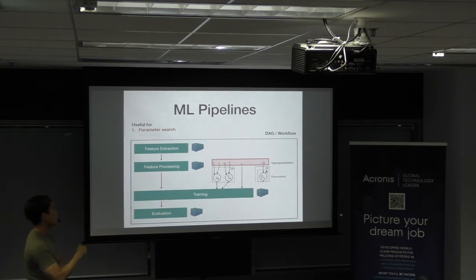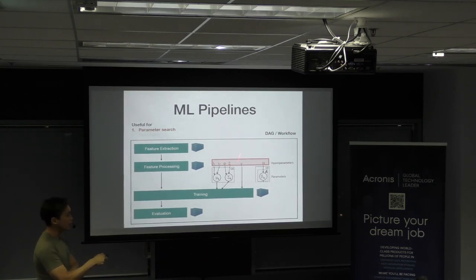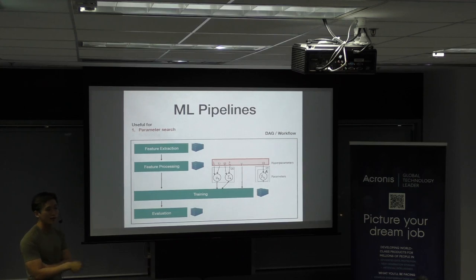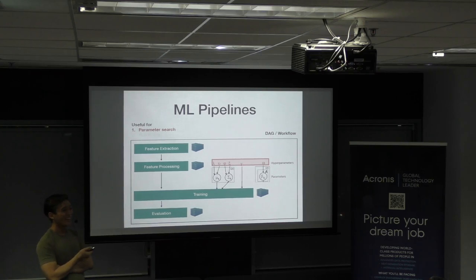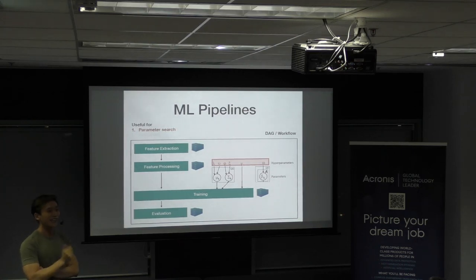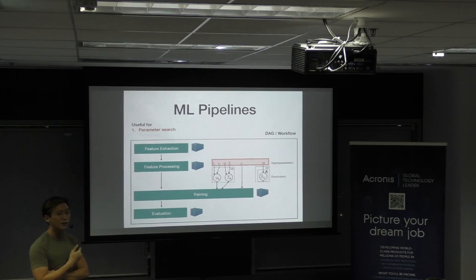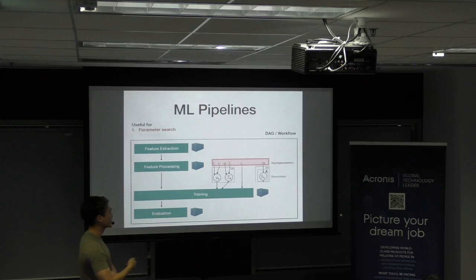I'm focusing on the hyper-parameter search part. You have a standard DAG: feature extraction, feature processing, then training. You want to try different parameters, so your DAG changes and the combination space you're exploring will be very huge — even with random search. You do train and then evaluation. Each step can be containerized, which helps with DevOps too, because they don't want to know how your data science algorithm works. Data scientists are not trained as engineers — we're trained to get the job done, so our code base isn't the best. Once you containerize it, it's a black box.